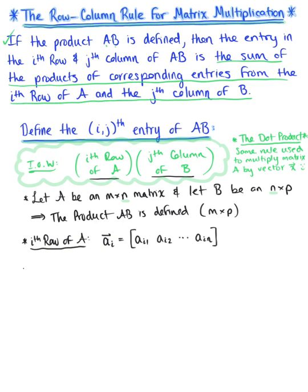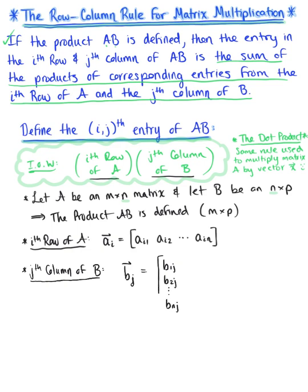Now we take the j-th column of matrix B. Since matrix B is an N by P matrix, this is a column vector — the j-th column vector of matrix B. Its entries are the entry in the first row, j-th column; the entry in the second row, j-th column; all the way down to the entry in the n-th row, j-th column.